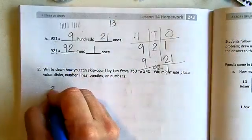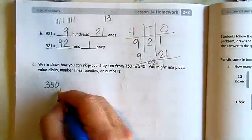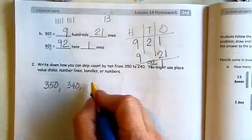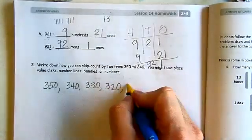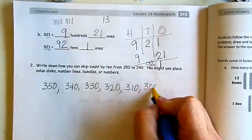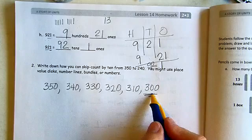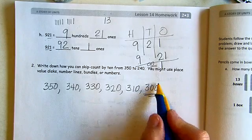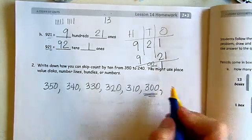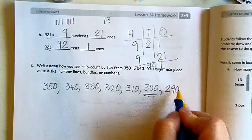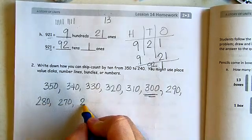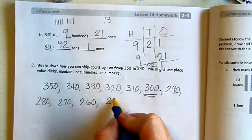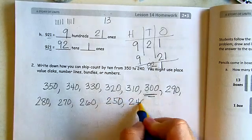350, 340, we skip counted like this. 350, 340, 330, 320, 310, 300. Now, at this place, this is when we had to switch out our place value disks so that we could continue counting backwards. So, from 300, we went to 290, 280, 270, 260, 250, 240.